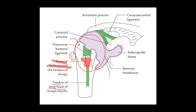There is communication between the synovial membrane and communicating bursae. The first is the subscapular bursa, seen in the anterior view — it communicates with the synovial cavity. The second is the infraspinatus bursa, seen in the posterior view, which also continues as part of the synovial cavity.